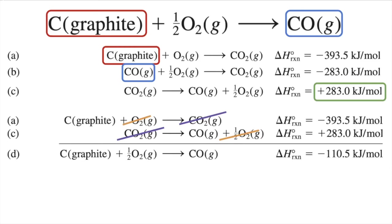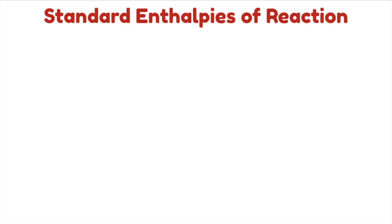The general rule for applying Hess's law is to arrange a series of chemical equations so that when added together, all intermediate species cancel except for the reactants and products that appear in the overall reaction. We want the elements on the left and the compound of interest on the right. We often need to multiply some or all of the individual step equations by appropriate coefficients. Another way to solve for ΔH is using the standard heats of formation — this method works for compounds that can be readily synthesized from their elements.